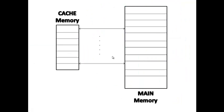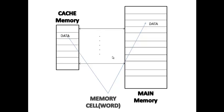Cache memory and main memory are nothing but collections of memory cells. A memory cell is the smallest unit for storing or retrieving data. The size of a memory cell is represented by one word, and the word size may be 8-bit, 16-bit, or 4 bytes — that depends upon the system. In general, a memory cell is said to be of size one word.